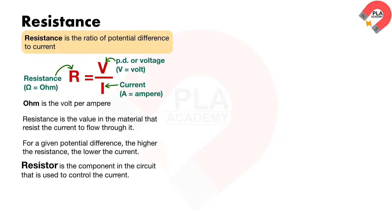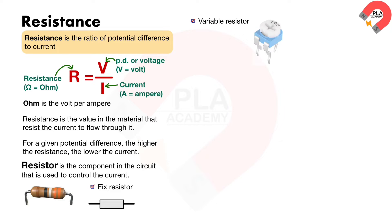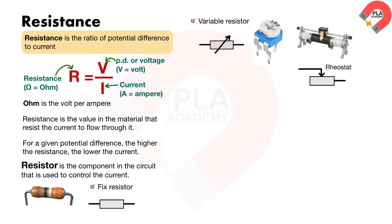Two types of resistor are the fixed resistor and the variable resistor. The fixed resistor and its symbol are shown on the diagram. The variable resistor and its symbol are also shown on the diagram. The variable resistor that is called a rheostat and its symbol is also shown. The variable resistor is used to vary the current in the circuit.